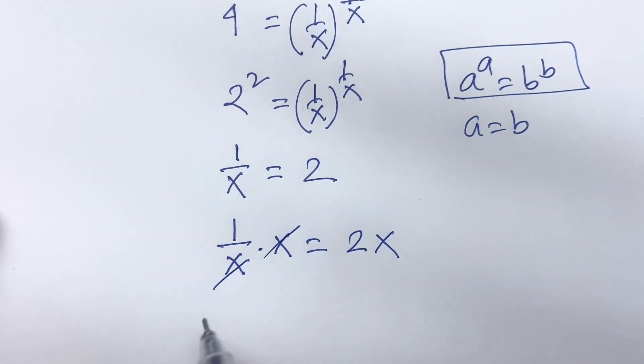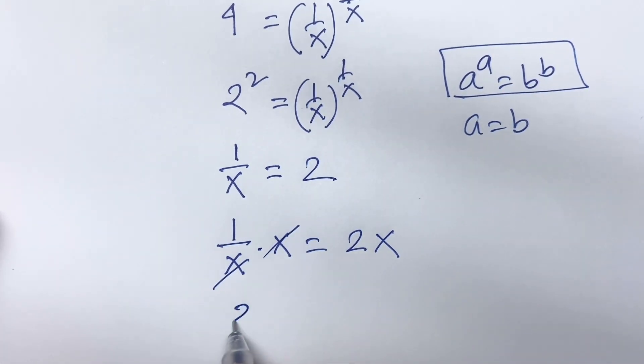So, here is x times x cancels. We find out 2x is equal to 1.